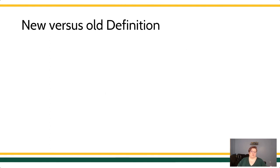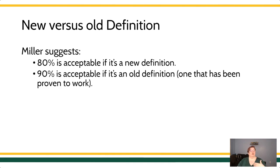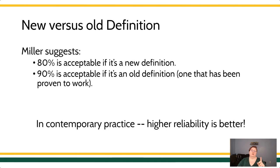Miller makes a distinction — a rule of thumb about new definitions versus old definitions. If you're developing a brand new behavioral definition and a brand new intervention for a client, 80% is pretty acceptable inter-observer agreement, because it's new, less refined, and you haven't discovered all the things that will challenge that definition yet. But once you've used that definition, refined it, and gotten it strong, you need to step up your game. So for an older definition, 90% is the benchmark. Higher is better, to a point.